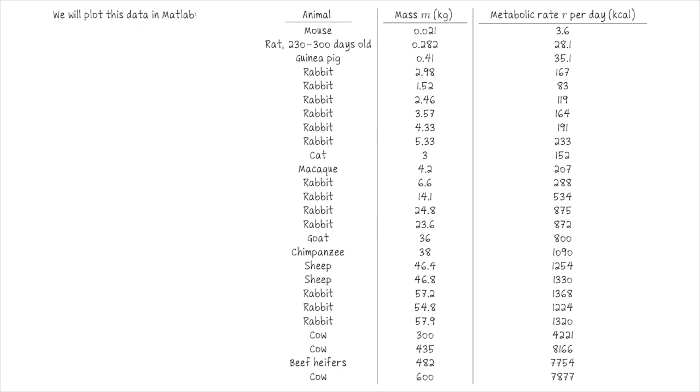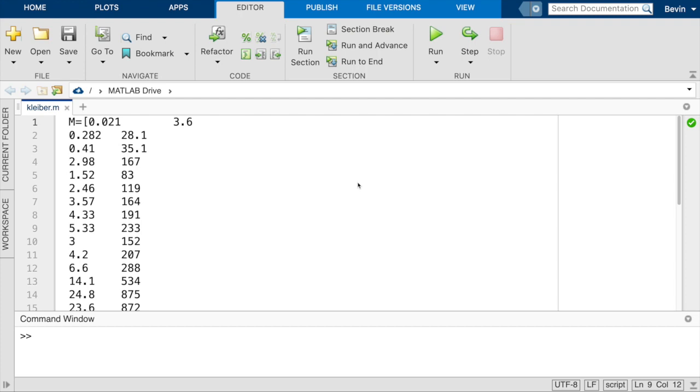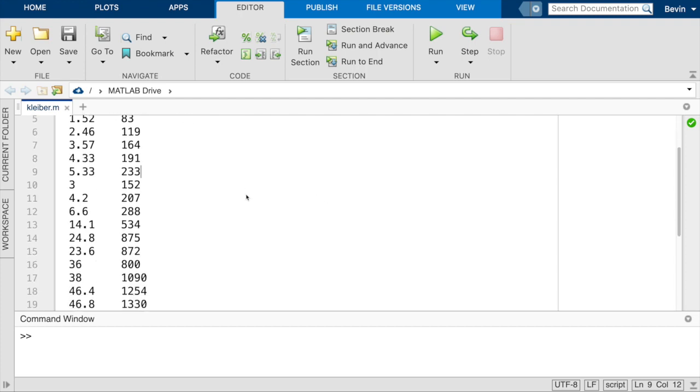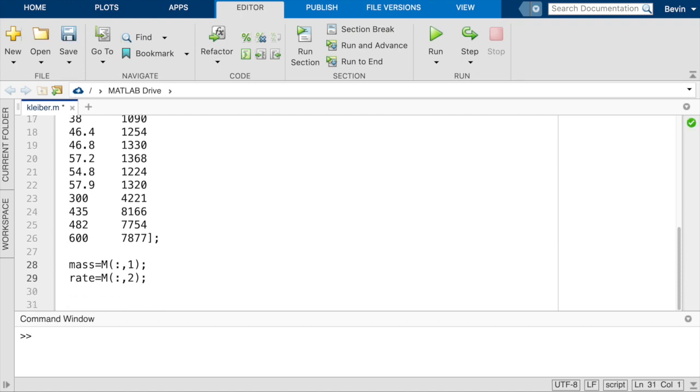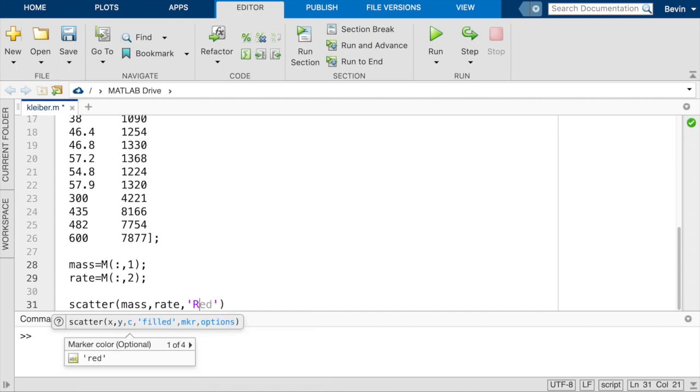Okay, so let's switch over to MATLAB. Here's the data that Kleber had. So I've put it all in a two column matrix in MATLAB. And specifically, the mass quantities went into the first column, and the metabolic rate went into the second column. So first, let's just scatter these data points and see if we can spot some sort of pattern that might lead us to a function modeling this data. So we'll do scatter, mass rate, and I'll make them filled.